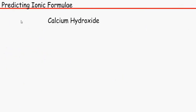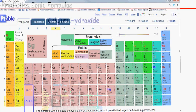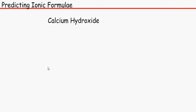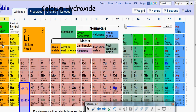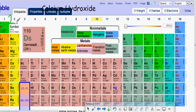Moving on — to predict an ionic formula, all you need is the periodic table. So if we have calcium hydroxide: calcium is in group 2, so it has 2 electrons on its outer shell and is going to lose 2 electrons, giving it a charge of 2+. The hydroxide — you need to remember this; it will not be written anywhere for you in the exam — hydroxide is OH minus.